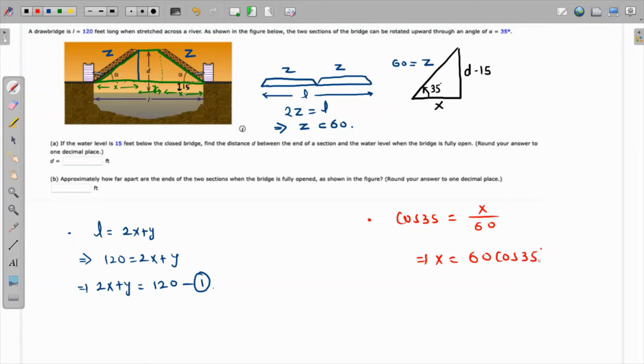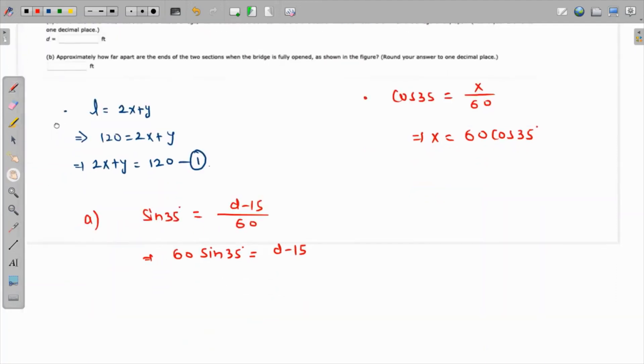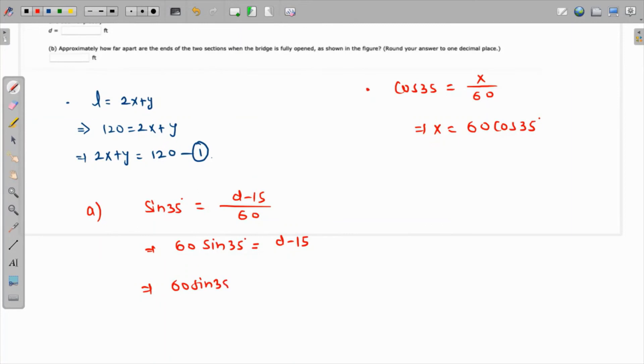For part a, sine of 35 will be opposite, which is d minus 15, over hypotenuse, which is 60. So 60 times sine 35 equals d minus 15. Adding 15 to both sides, we have 60 sine 35 plus 15 equals d. Let me grab my calculator. 60 times sine of 35 plus 15 gives us d equals 49.41 feet.